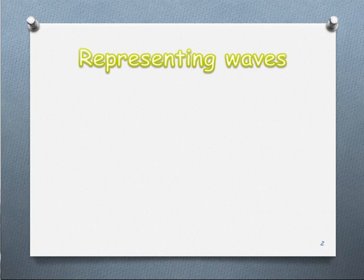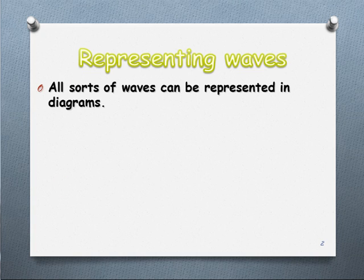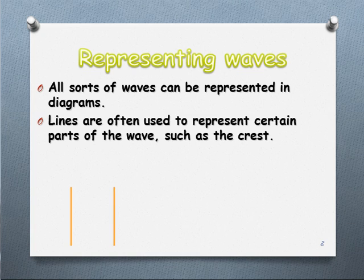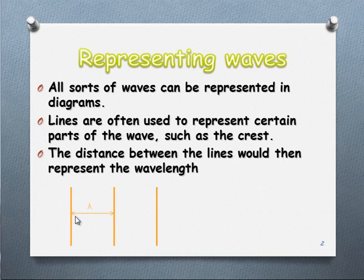A useful thing for us to be able to do is represent waves. They're not necessarily the easiest things to represent in a diagram, to show information such as reflection, refraction, and diffraction, so we've come up with methods to do it. All sorts of waves can be represented using various diagrams. The most common thing is to use lines which represent a certain part of the wave — generally we stick with the crest, the uppermost part. The distance between these lines would actually be the wavelength, crest to crest.